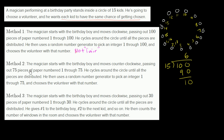Now let's look at method 2. The magician starts with the birthday boy and moves counterclockwise, passing out 75 pieces of paper numbered 1 through 75. He cycles around the circle until all the pieces are distributed. He then uses a random number generator to pick an integer between 1 and 75 and chooses the volunteer with that number. Pause and think about whether this one is fair.